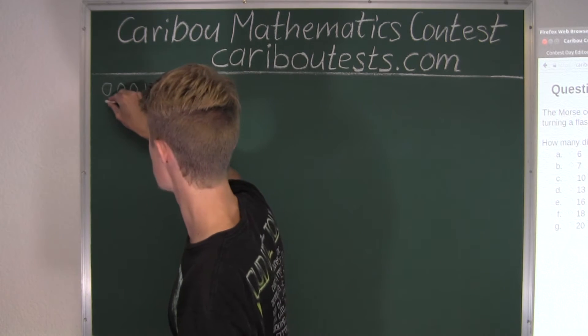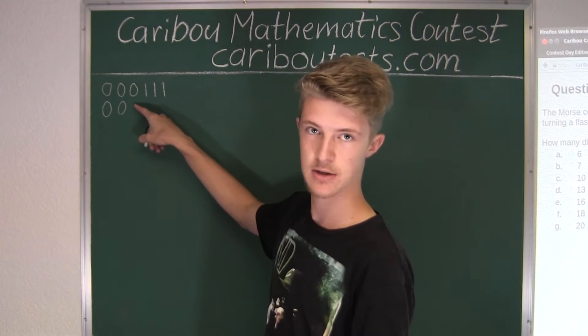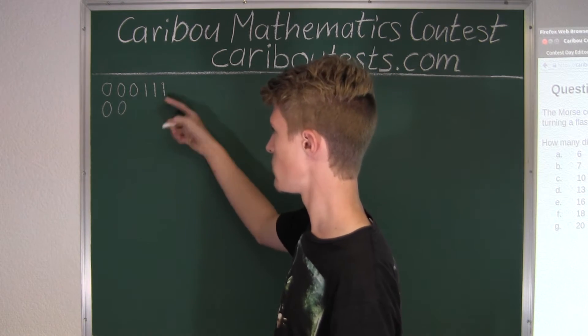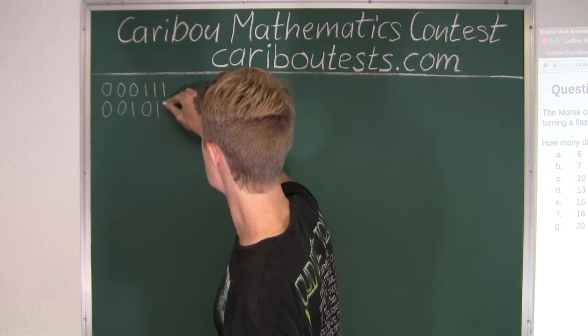Okay, and now next we would still have 0, 0, and now we can't have 0 because then we would just have three ones again, so we would have to have 1, and then right away it is 0, and then two ones.